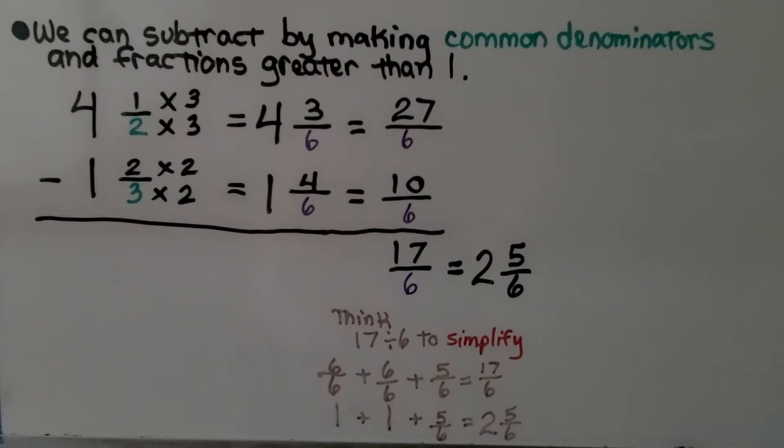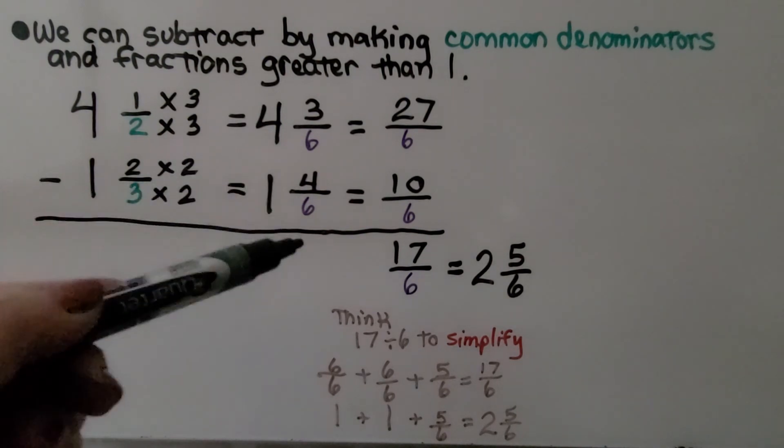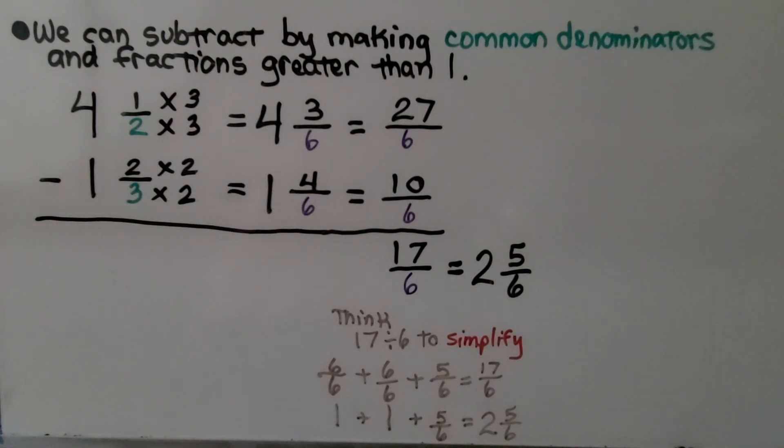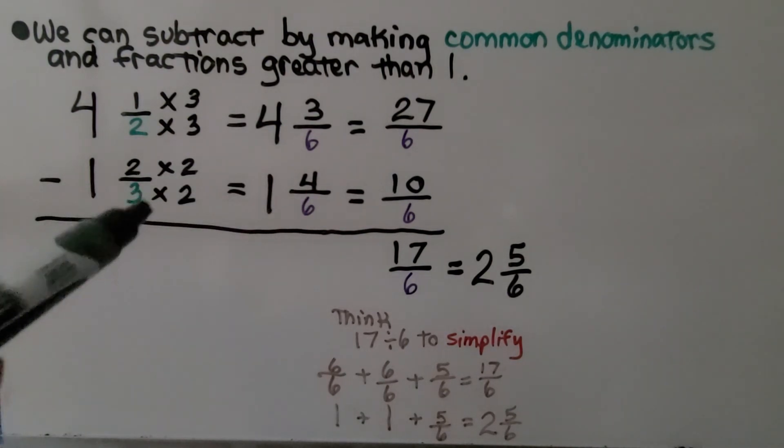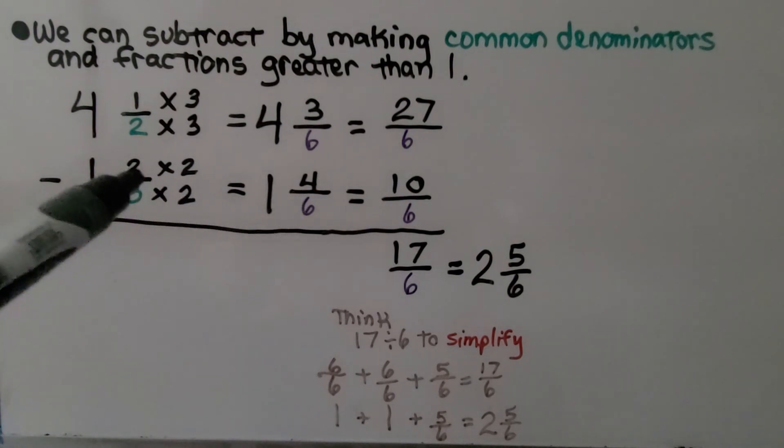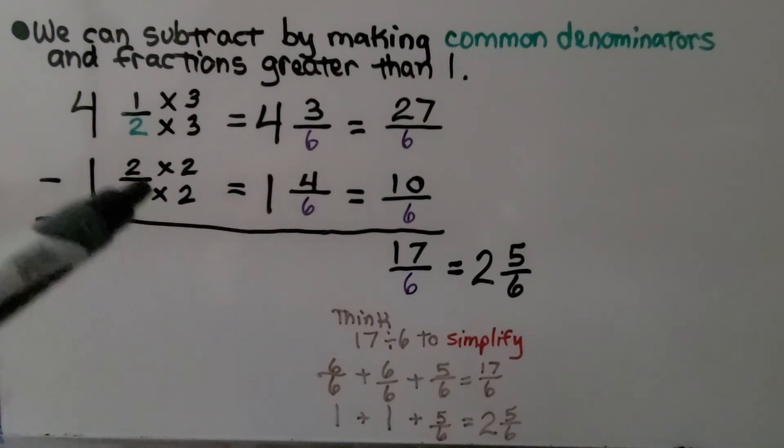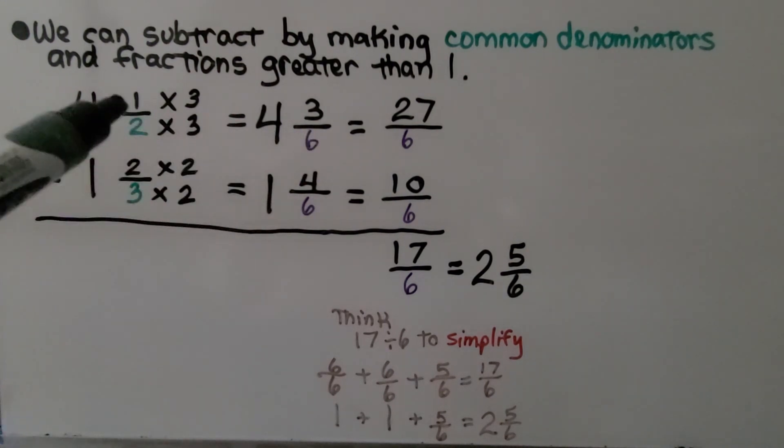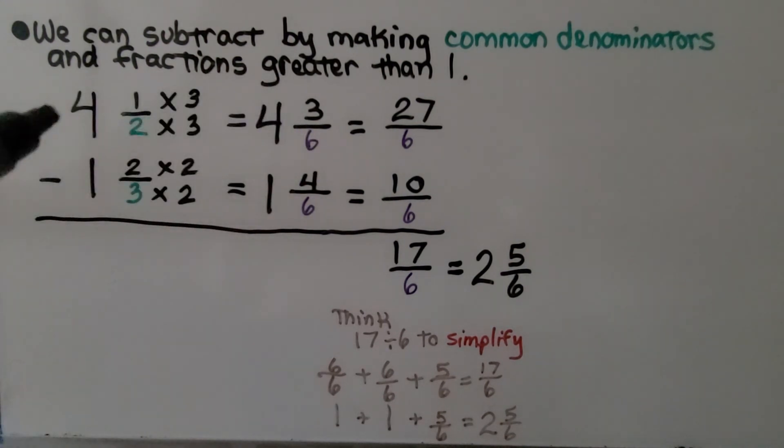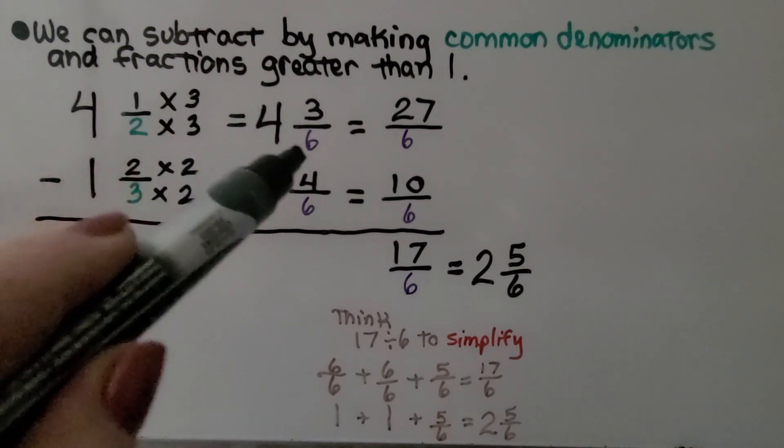We can subtract by making common denominators and fractions greater than 1. Here we have 4 and 1/2 minus 1 and 2/3. We need to find a common denominator. They can both meet at 6 as their least common multiple. And 3 times 2 is 6. And so we do 2 times 2, which is 4. So 1 and 2/3 becomes 1 and 4/6. And 2 times 3 is 6. We need to multiply 1 times 3. This 4 and 1/2 becomes 4 and 3/6.